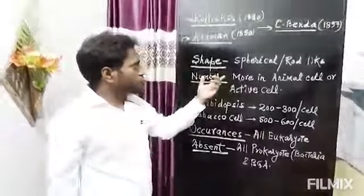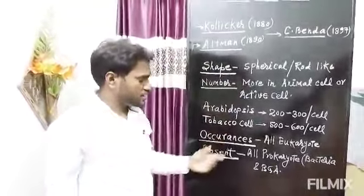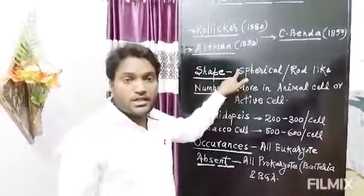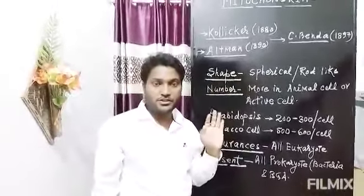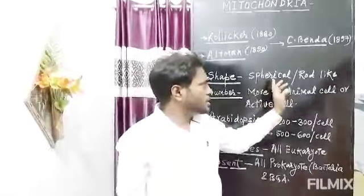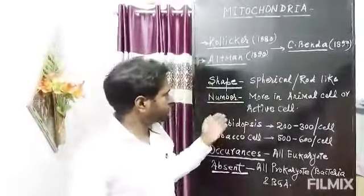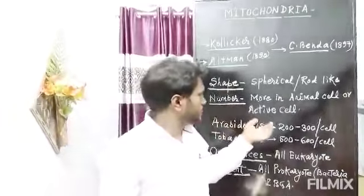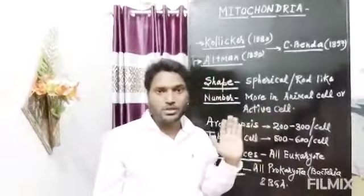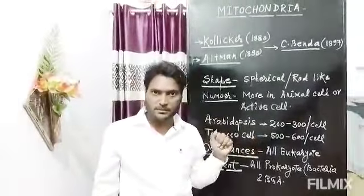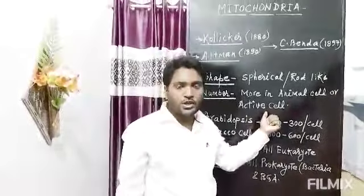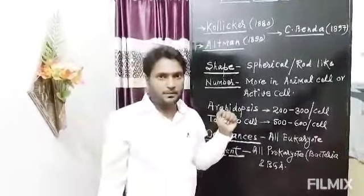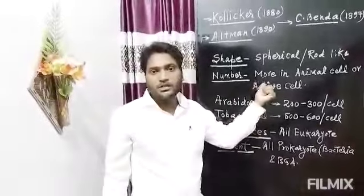Now we would like to introduce the shape, number and occurrences of mitochondria. Regarding the shape, mitochondria is variable in shape, but in the case of plants, generally the shape of mitochondria is spherical to rod-like. When we see the number of mitochondria per cell, we find that number of mitochondria is more in animal cells as compared to plant cells, because animal cells are more active and require more energy.